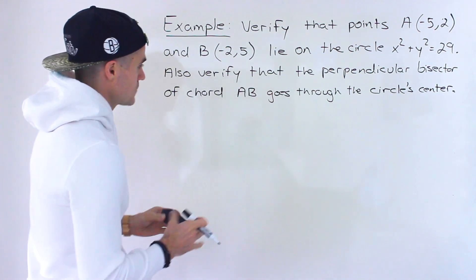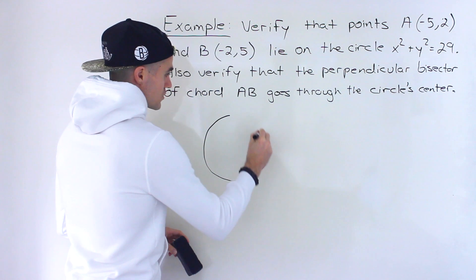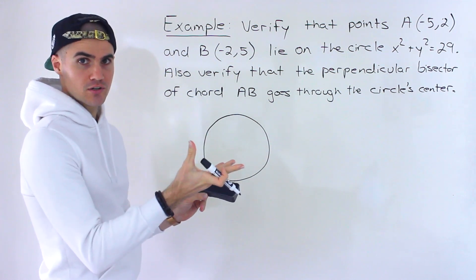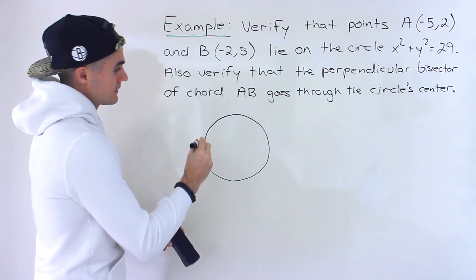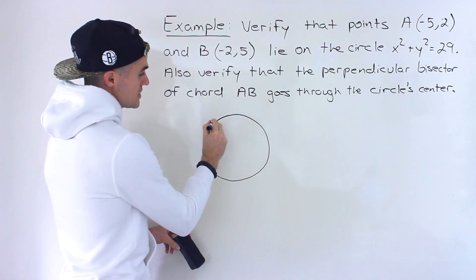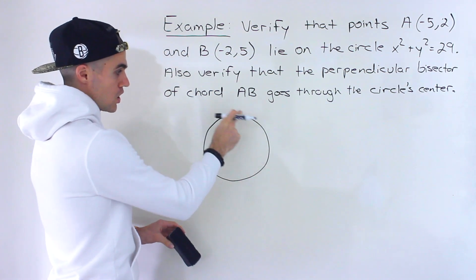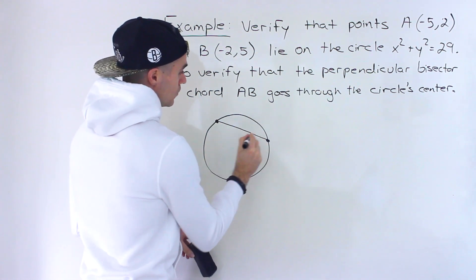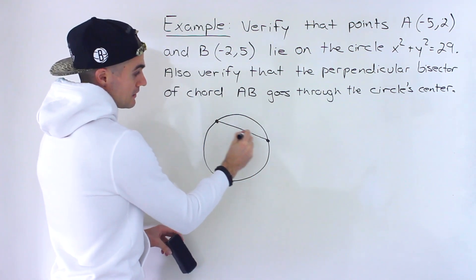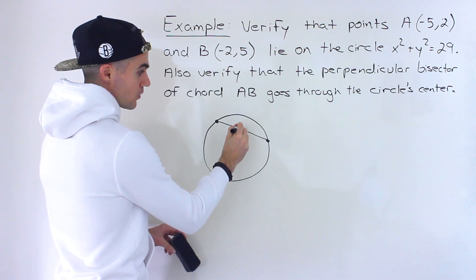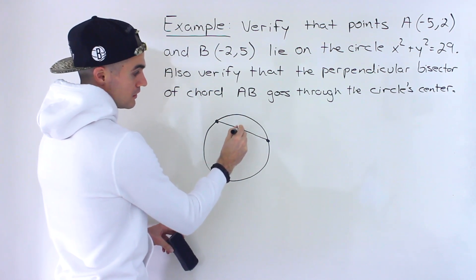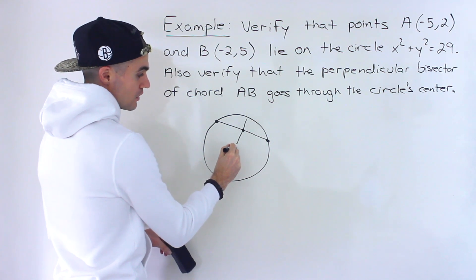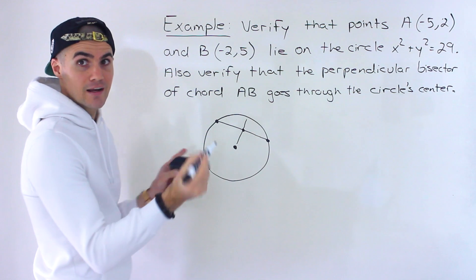For all circles there's a rule called the perpendicular bisector of a chord conjecture — you can google that for more. Basically, if you take any chord on a circle, which is just a line connecting two points on the circle, the perpendicular bisector of that chord — a line through the midpoint and perpendicular to the chord — is always going to go through the center of the circle.